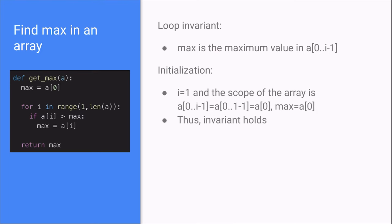The following is an example of a loop invariant for an algorithm that finds the maximum value in an array. First, let's describe the algorithm. It is a method get underscore max with an array a as a parameter.